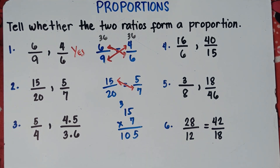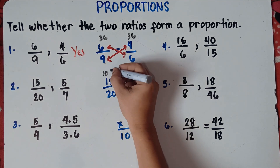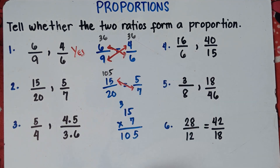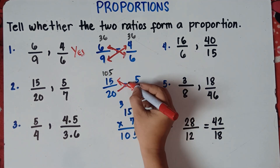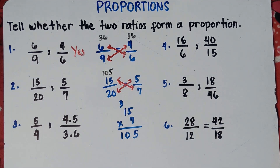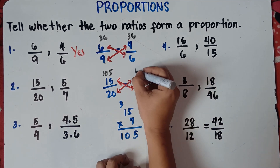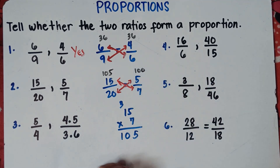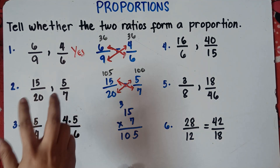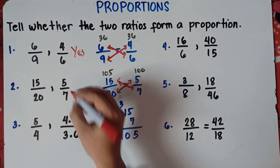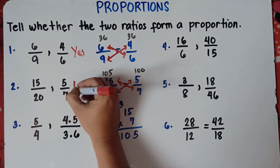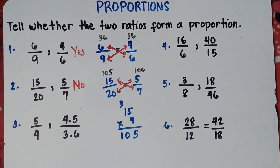So 15 times 7 is 105. How about 20 times 5? That is 100. So do they have the same answer? Nope, they don't have the same answer. Therefore, these two ratios will not form a proportion. Our answer is no for number two.